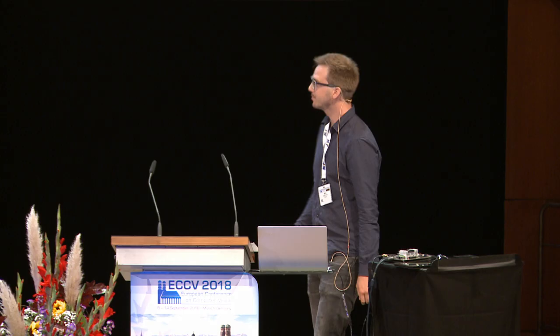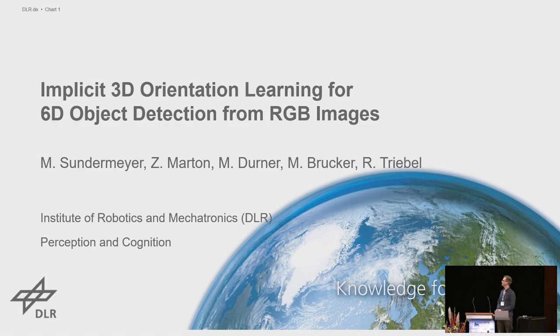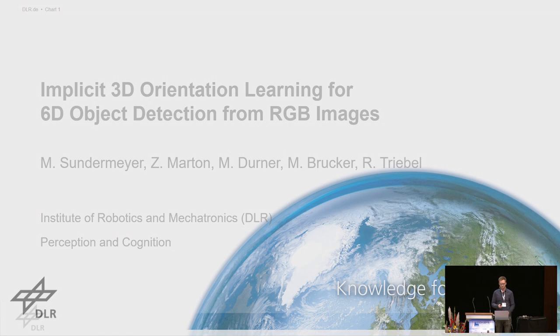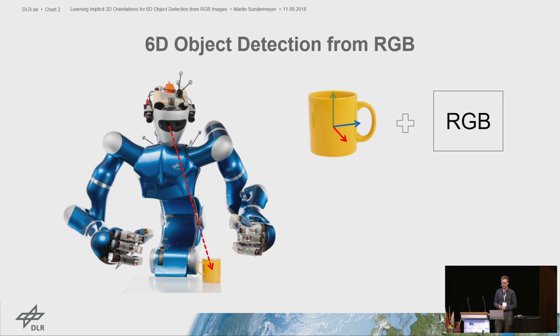My name is Martin Sundermeyer. I'm from the Institute of Robotics and Mechatronics at the German Aerospace Center, and I will present implicit 3D orientation learning for 6D object detection from RGB images. The task is to find an object in an image and determine the 3D translation and 3D rotation from camera to object coordinates.